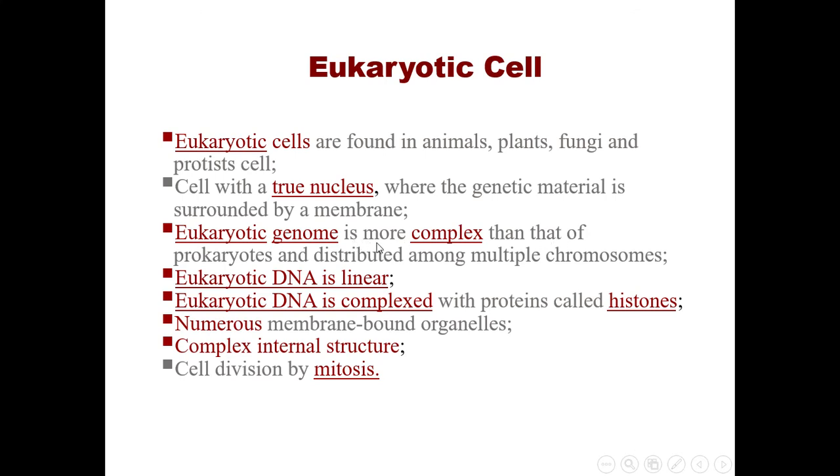The eukaryotic genome is more complex than that of prokaryotes and distributed among multiple chromosomes. Eukaryotic DNA is linear. Eukaryotic DNA is complexed with proteins called histones.